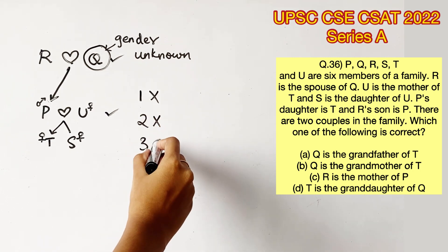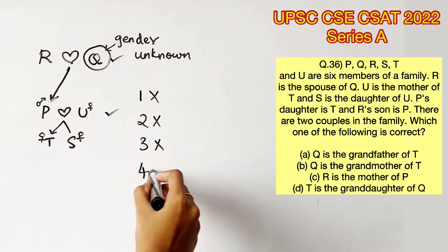C says R is the mother of P. We don't know their genders. D says T is the granddaughter of Q. We know the gender of T, right? Therefore, statement 4 is right.